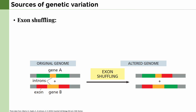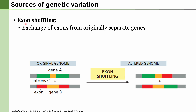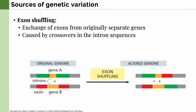The next source of genetic variation is called exon shuffling. From our previous lecture, we learned that exons are specific regions in a gene that code for proteins, and introns are intervening non-protein-coding sequences. In exon shuffling, there is an exchange of exons from originally separate genes. In this example, we can see two genes with distinct exons, and as a result of the shuffling, they now have a mixture of each other's exons. These are caused by crossover in the intron sequences between different exons, and as a result, they can create a new functional gene.